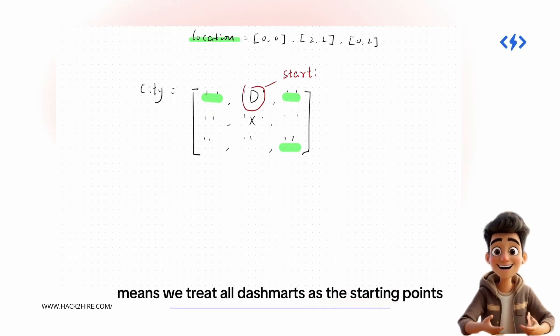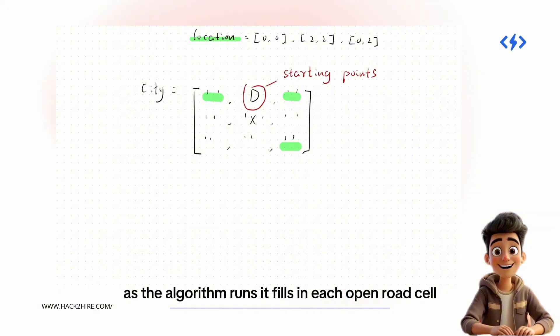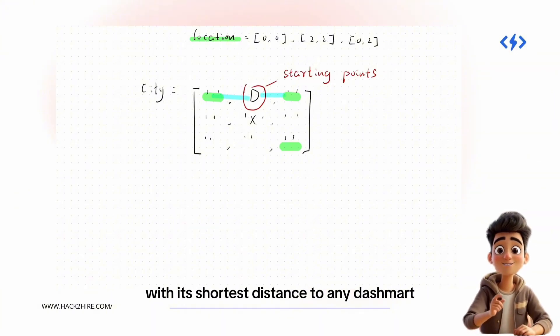Multisource BFS means we treat all dashmarts as the starting points. As the algorithm runs, it fills in each open road cell with its shortest distance to any dashmart.